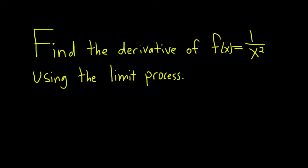Find the derivative of f(x) = 1/x² using the limit process. Solution: f'(x), which is the derivative of f at x, is equal to the limit as h approaches 0 of f(x+h) - f(x) all over h.